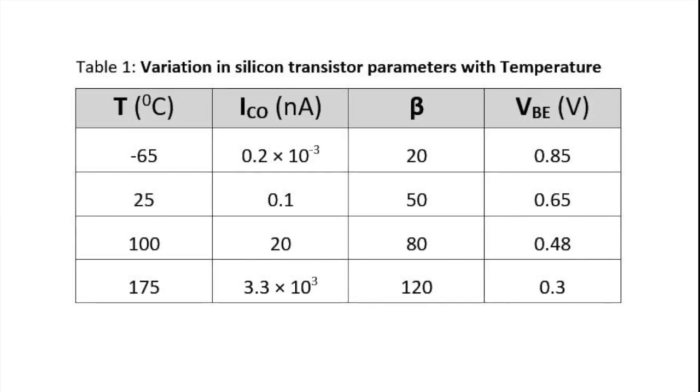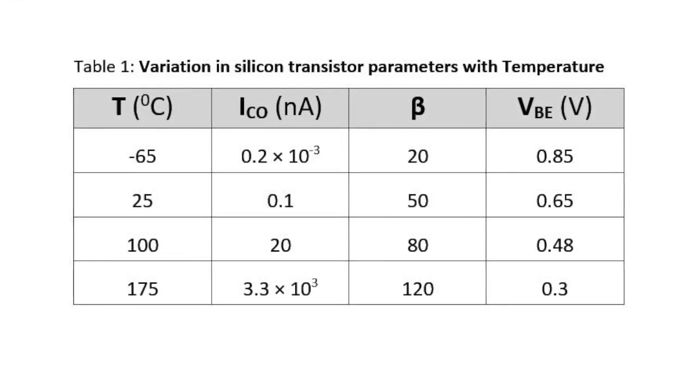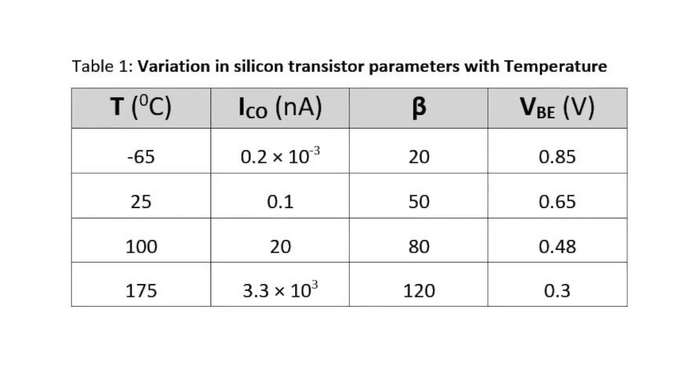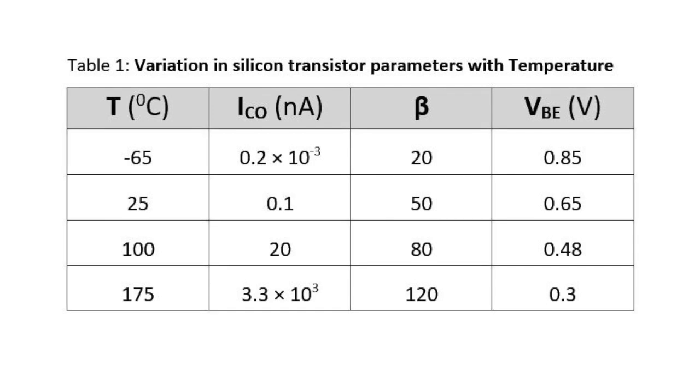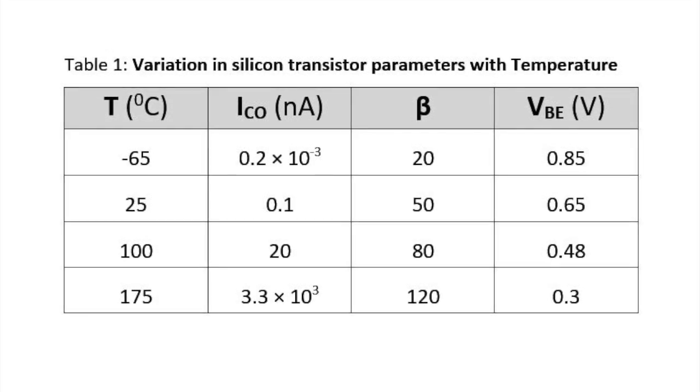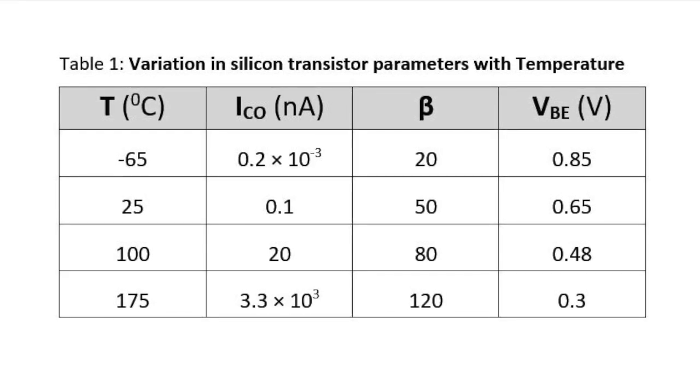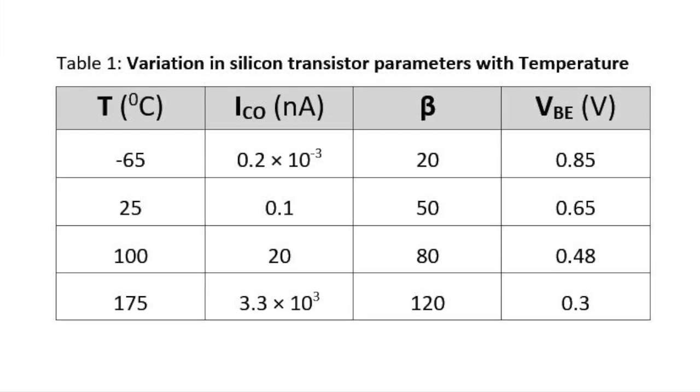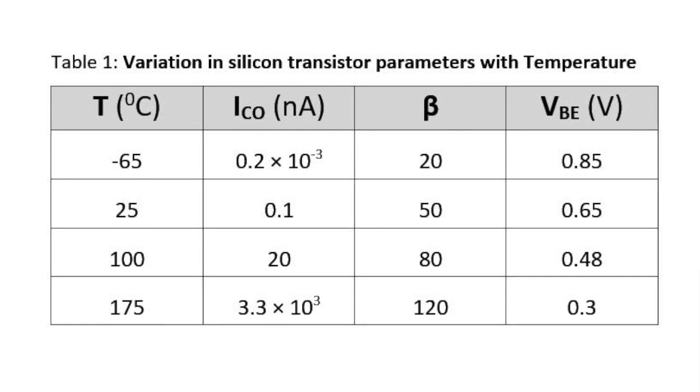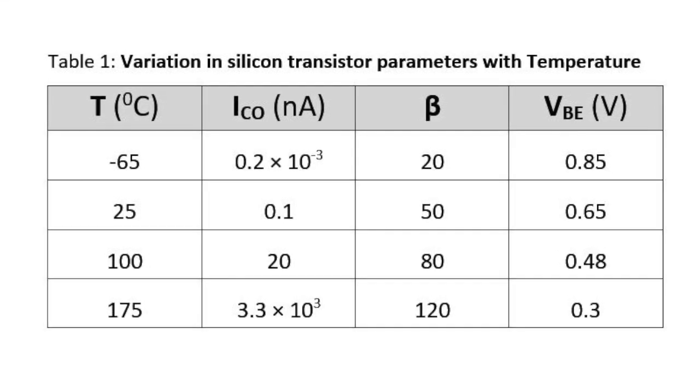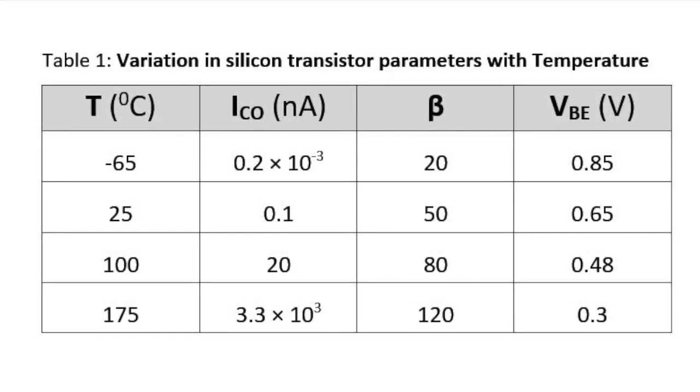Table 1 reveals how the level of leakage current and base emitter voltage change with increase in temperature for a particular transistor. At room temperature, about 25 degree Celsius, the leakage current is equal to 0.1 nanoampere, while at 100 degree Celsius, that is, at boiling point of water, it is about 200 times larger at 20 nanoampere. For the same temperature variation, beta increased from 50 to 80, and VBE dropped from 0.65 to 0.48 volt.